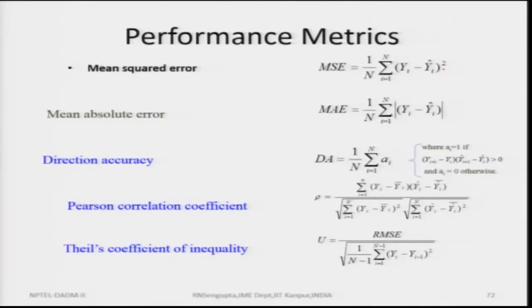The Pearson correlation coefficient — simply the correlation coefficient used in the concept of covariances — will be utilized. Theil's coefficient of inequality is the root mean squared error divided by the prediction value over two time periods n−1, depending on the degrees of freedom already considered.